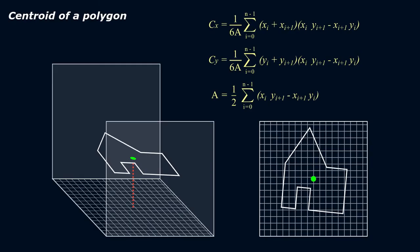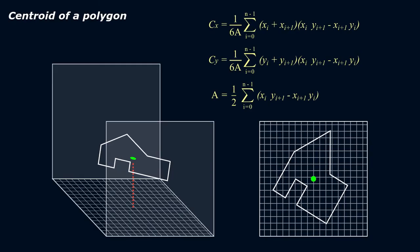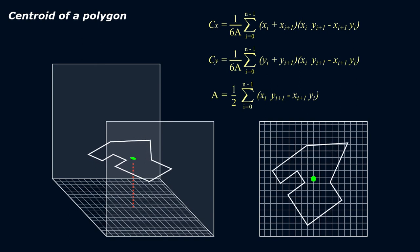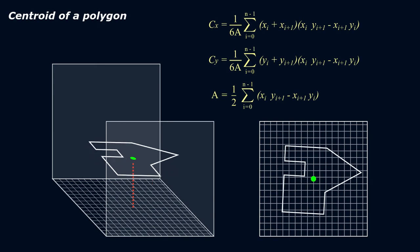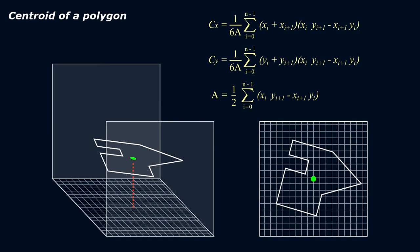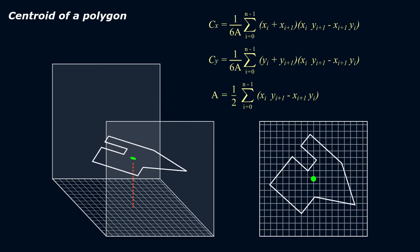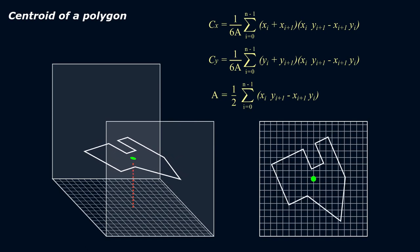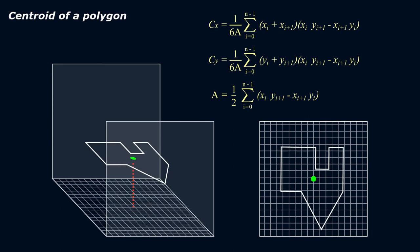The centroid of a polygon is its center of mass. Physically, it is the unique point at which the shape could be perfectly balanced on the tip of a pin. The centroid of a flat figure, such as a polygon, is the arithmetic mean position of all the points in the figure.